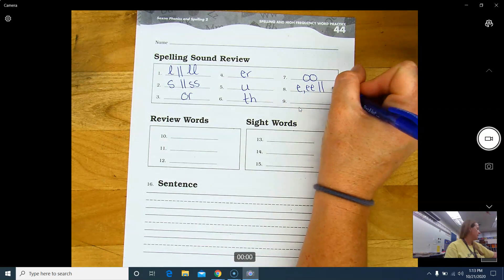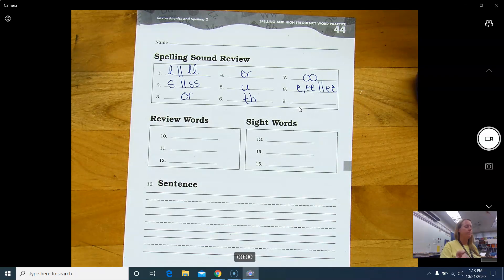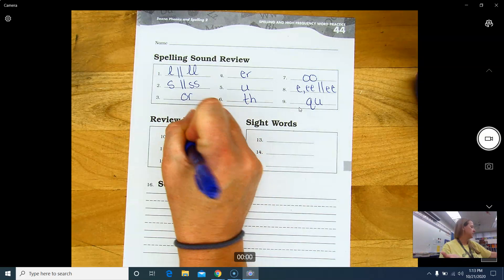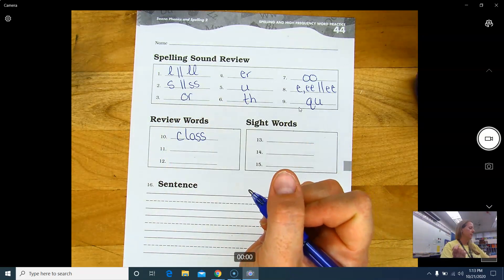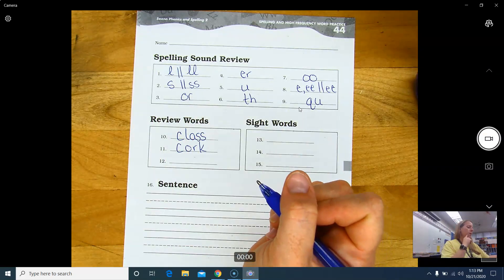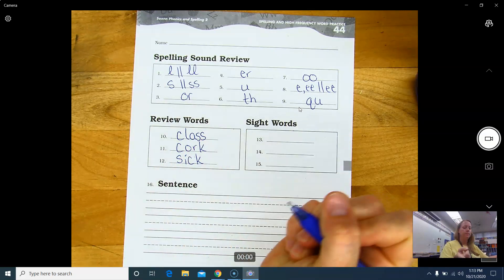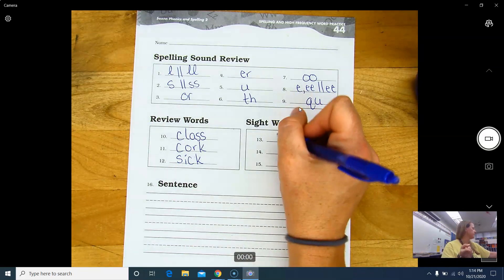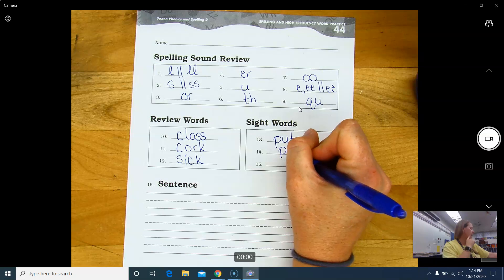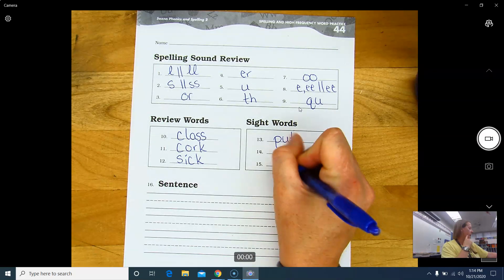But that's okay. Number nine. Qua. Q-U. Review words. Number 10. Class. C-L-A-S-S. Go ahead. Number 11. Cork. C-O-R-K. Number 12. Sick. S-I-C-K. Number 13. Sight words. Put. P-U-T. 14. Pool. P-U-L-L. And number 15. Fool. F-U-L-L.